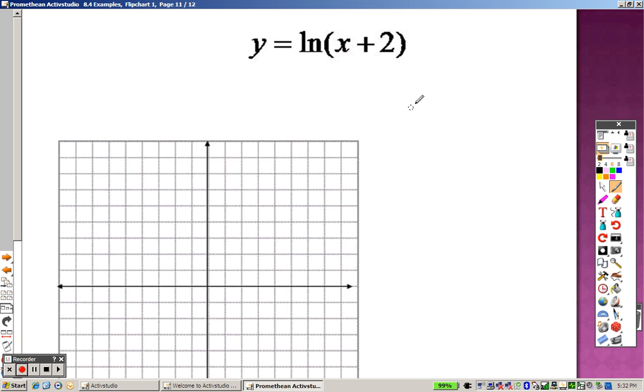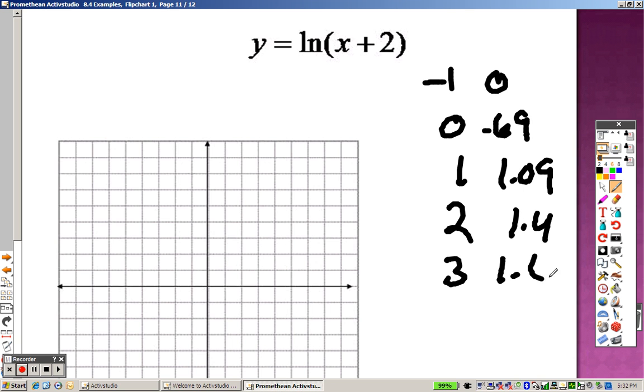So when I go to plot these, I have 1, 0, 0, 0.69, 1, 1.09, 2, 1.4, 3, 1.6, 4, 1.8. So when I go to graph these, it's negative 1, 0, 0.69, 1, 1.09, 2, 1.4, 3, 1.6, 4, 1.8.